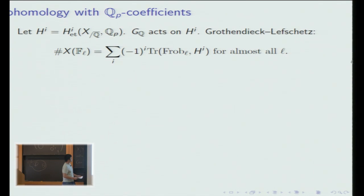Now let me move to Q_p coefficients, which is the main subject of the talk. We can also define the étale cohomology of X, and I'm gonna let that be H^i. Since X is defined over Q, we get an action of the absolute Galois group of Q. This is an important invariant. For example, one can recover point counts, the number of points on X mod ℓ from the Grothendieck-Lefschetz trace formula.